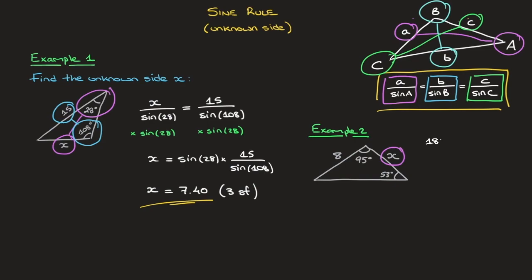We calculate 180 minus 95 minus 53. And by all means check, but that's equal to 32 degrees. And so I can add that here to my diagram. That's 32 degrees.